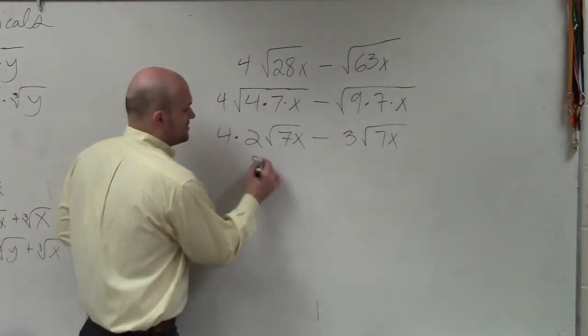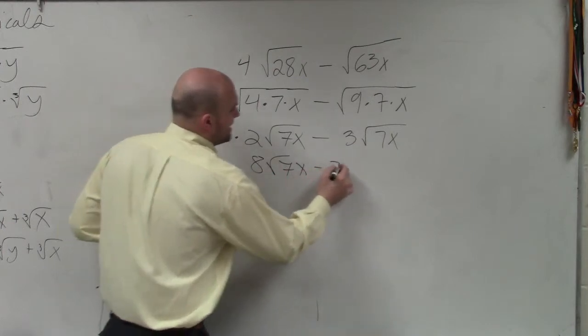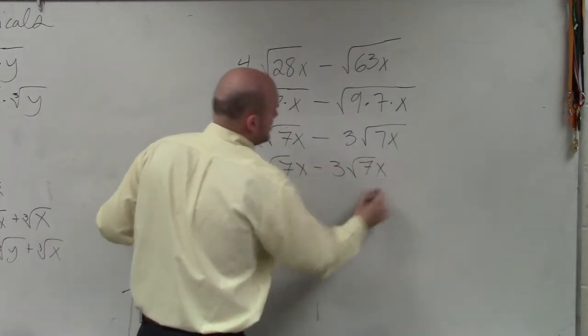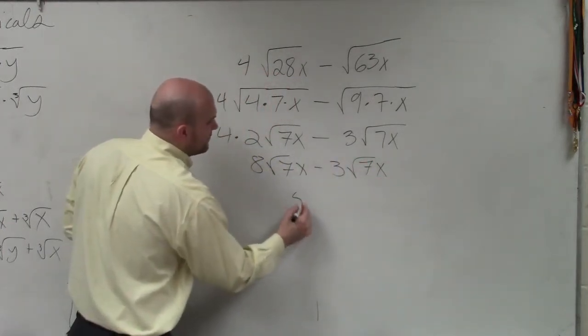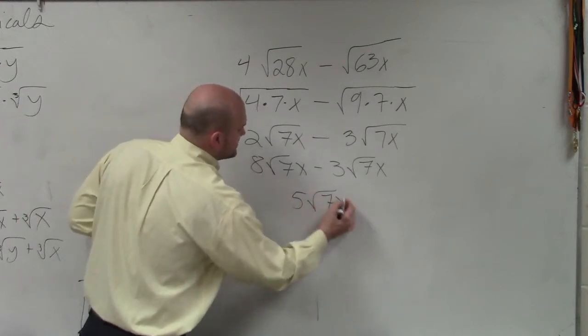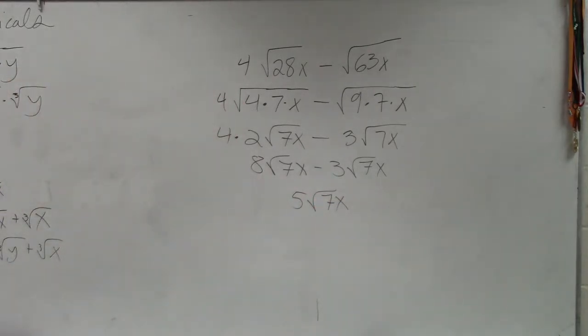So 4 times 2 is really 8 square root of 7x minus 3 square root of 7x, which gives 5 square root of 7x. Just like when we had addition and subtraction, the radicand that's exactly the same for both of them does not change. Only your coefficients in front are what you're working with.